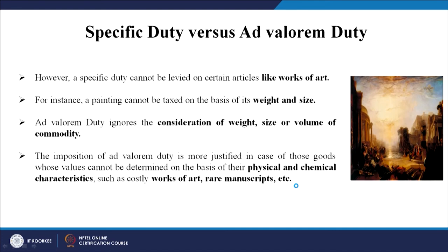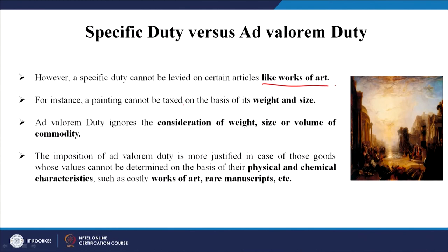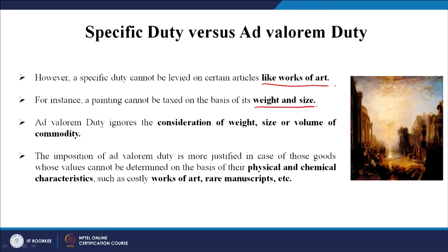A specific duty cannot always be levied on articles like works of art. For instance, a painting cannot be taxed on the basis of weight and size — an MF Hussain painting might physically weigh very little but sell for crores. Ad valorem duty ignores the consideration of weight, size, or volume. The imposition of ad valorem duty is more justified for goods whose values cannot be determined on the basis of physical characteristics, such as works of art or rare manuscripts.